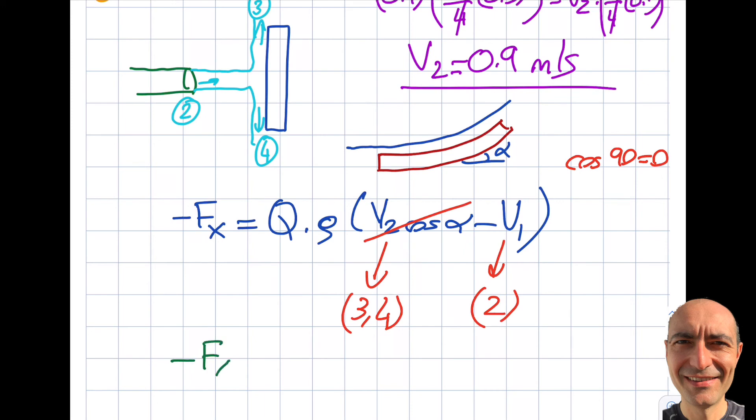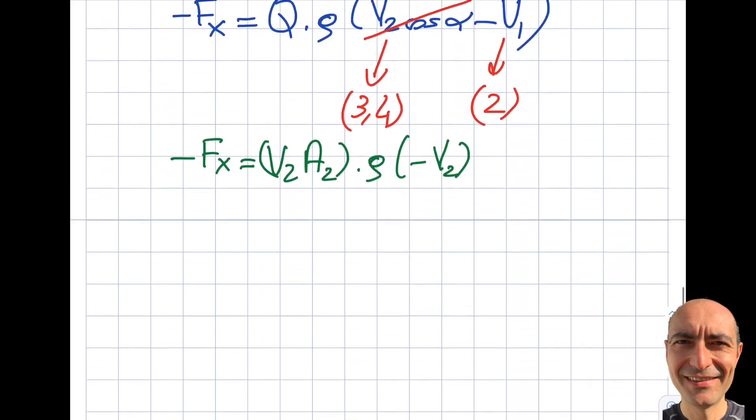If I want to rewrite this equation, it's going to be minus Fx equals ρ·V2·A2·(-V2). That's what I have.